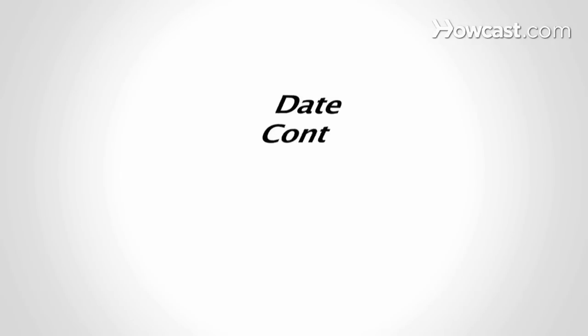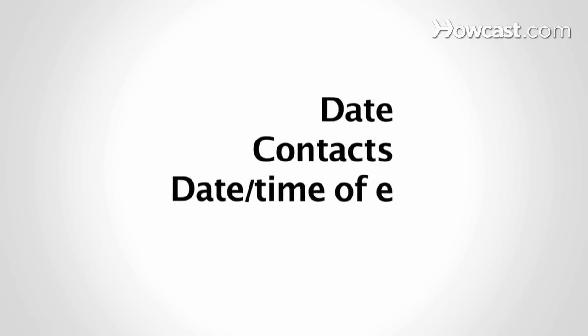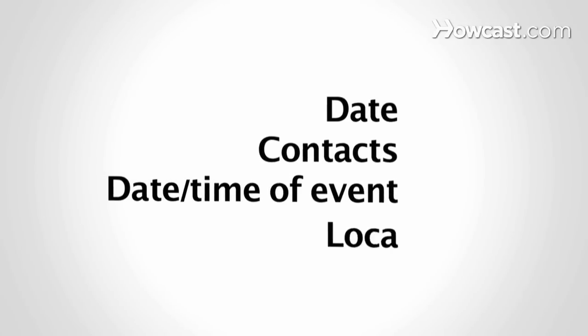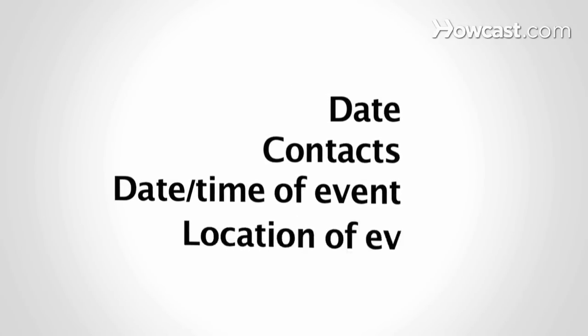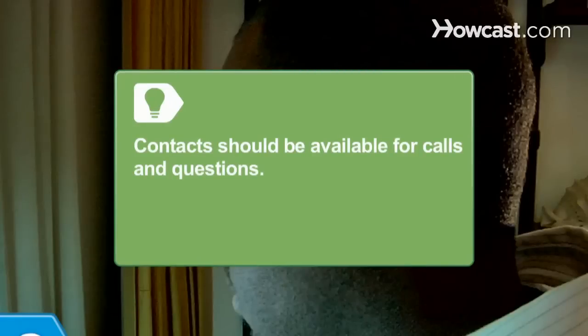Step 4. At the top of the page, on either the left or right side in bold, write the date of the release, a list of contact names and numbers, and basic information like the date, time, and location of the event. Make sure the contacts you list are available to answer calls and emails, and prepare to respond to questions.